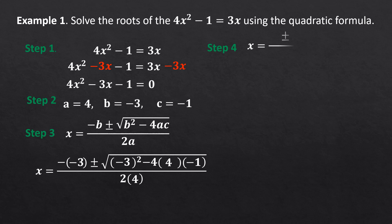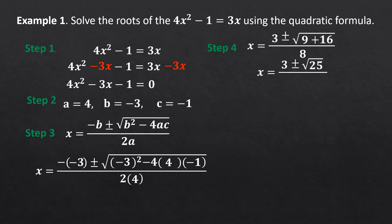Step 4: Solve the resulting equation. Negative times negative 3 equals positive 3. Negative 3 squared equals positive 9. The product of negative 4 times 4 times negative 1 equals positive 16. Two times 4 equals 8. So we have X equals 3, positive and negative square root of 9 plus 16, which is the square root of 25, over 8. The square root of 25 equals 5, so X equals 3 plus or minus 5 over 8.